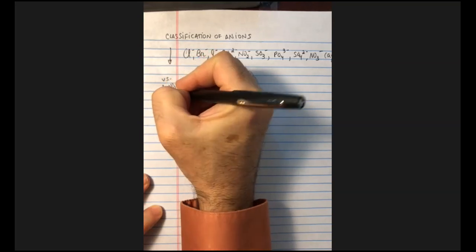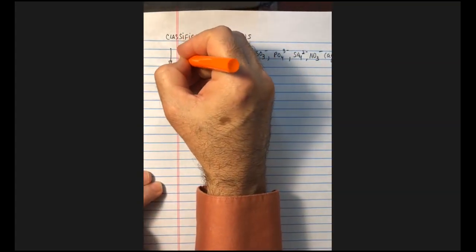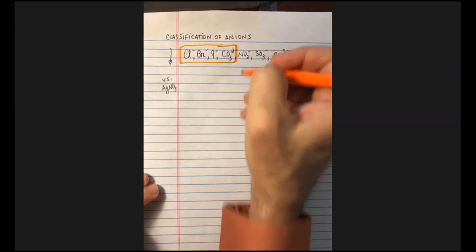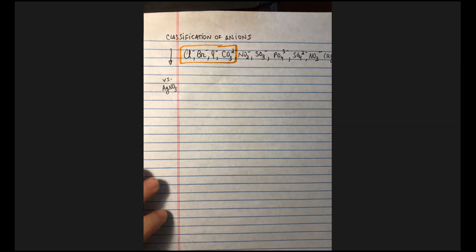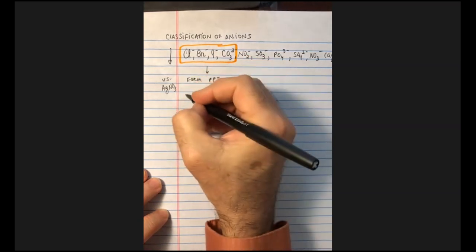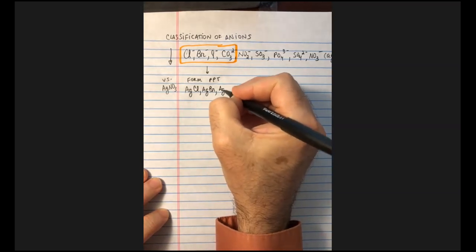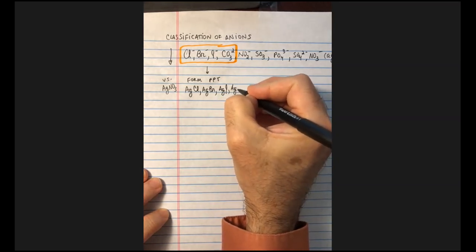The first classification is a reaction against silver nitrate. We all recognize the action of silver ions with chlorides, bromides, and iodides. Essentially what's going to happen is that chloride, bromide, iodide, and carbonate ions are going to give me a reaction versus silver nitrate — they will form a precipitate. The precipitates are silver chloride, silver bromide, silver iodide, and silver carbonate.